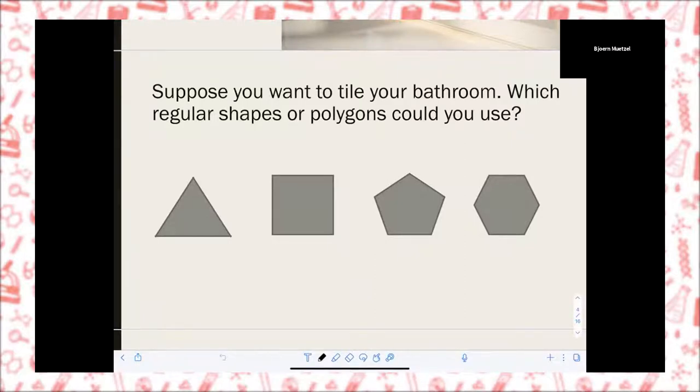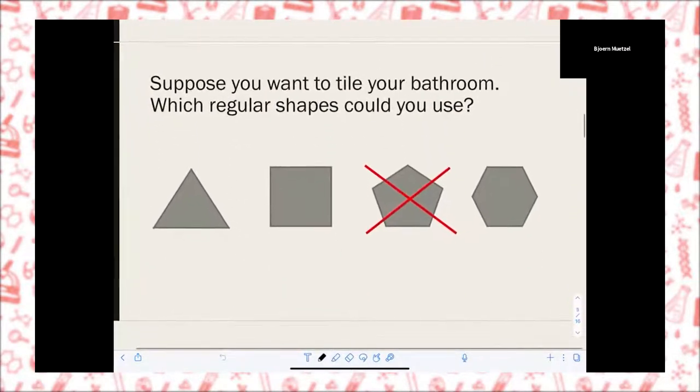Let's start easy. Suppose this is your bathroom, right? Suppose you want to tile it. Which regular shapes or polygons could you use? Let's have a look. Think about it shortly. Could we use a triangle? The square? The pentagon? Or the hexagon?